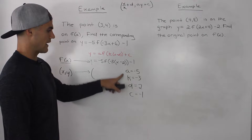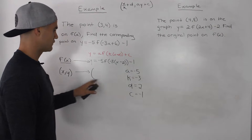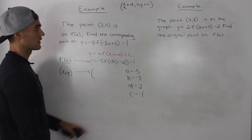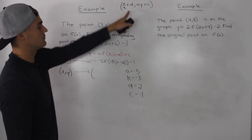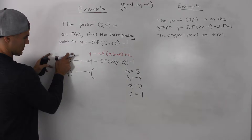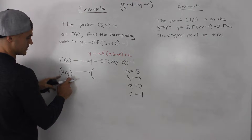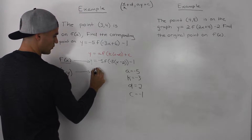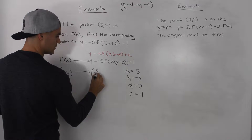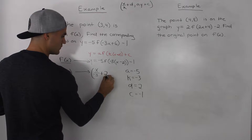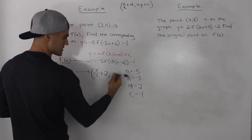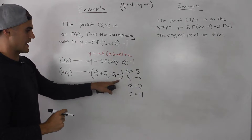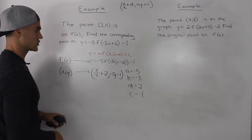Now that we have all of our transformation values, we can figure out the mapping formula to transform f(x) into the new function. For reference, the mapping formula is shown here. A point (x, y) on f(x) maps to x over k plus d for the new x-coordinate, and ay plus c for the new y-coordinate. So with k equals negative 3, d equals 2, a equals negative 5, and c equals negative 1, the mapping formula becomes: x over negative 3 plus 2, and negative 5y minus 1.